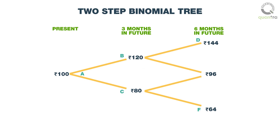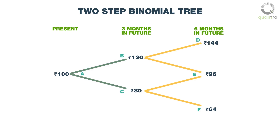For computing the option price, we will sequentially compute the price of the option first at 3 months in the future at points B and C, and then compute the price of the option today at point A. The value of the option at points C, E, and F will be 0, as the option will expire out of the money if it takes the bottom path. The price at point B will be computed by considering the branch BDE as a one-step binomial tree. Once we compute the price at point B, we will consider the ABC branch and compute the option price at point A, applying our learnings from the one-step binomial tree example twice.